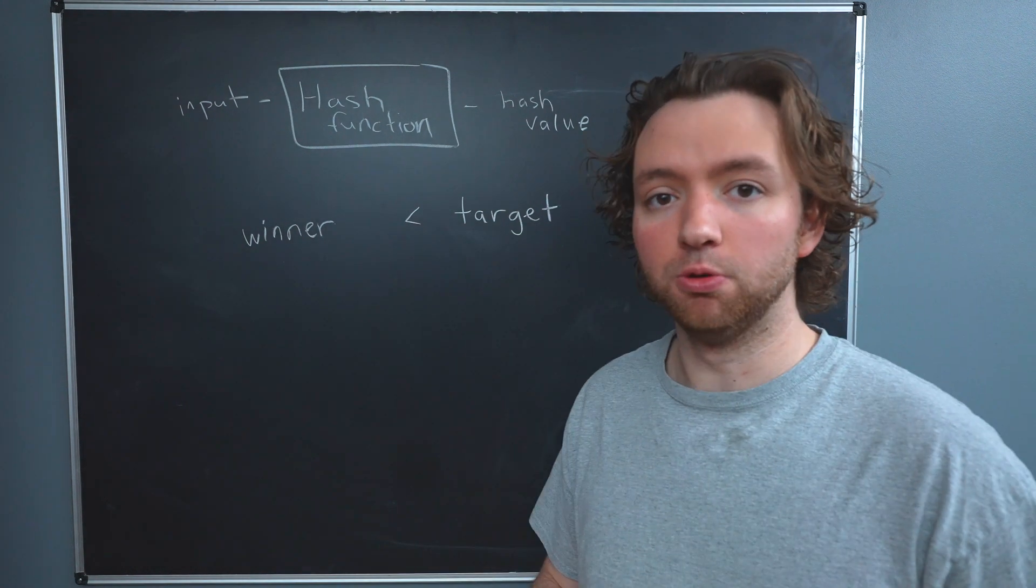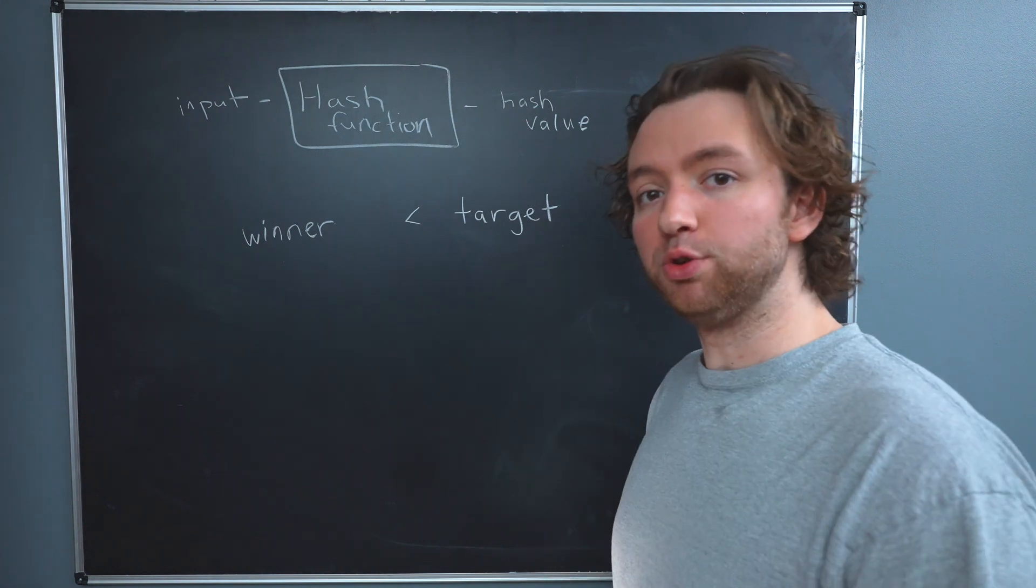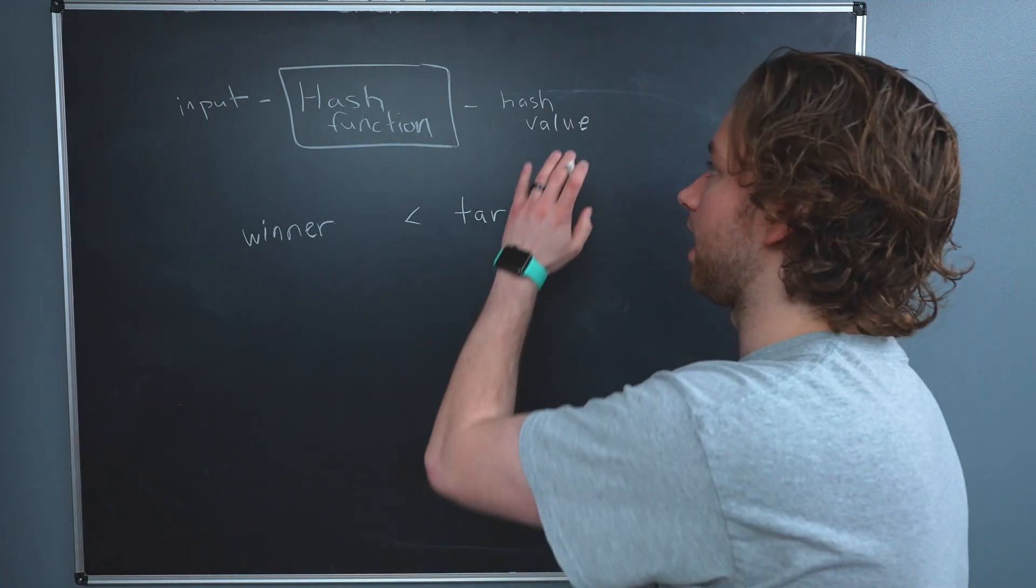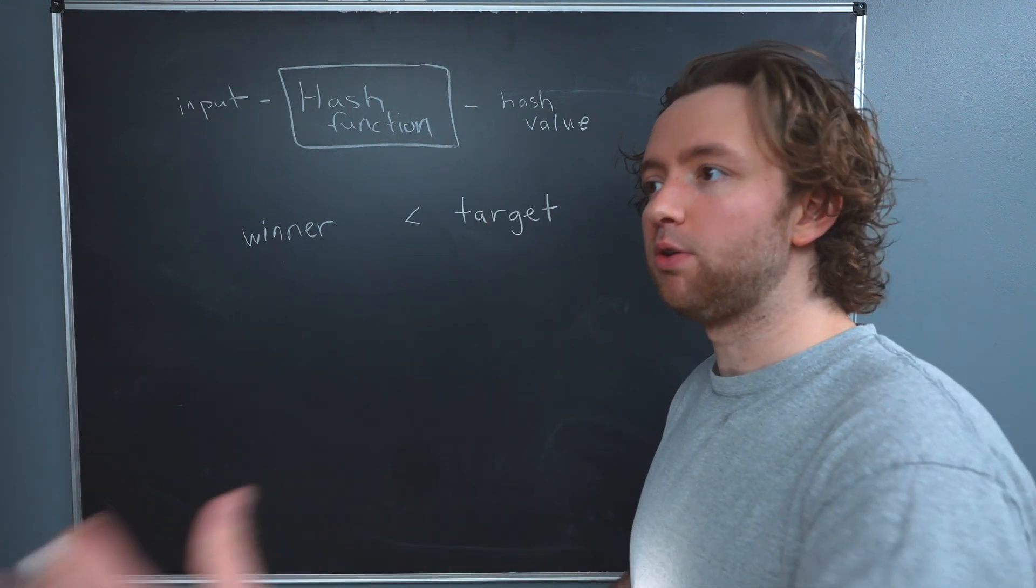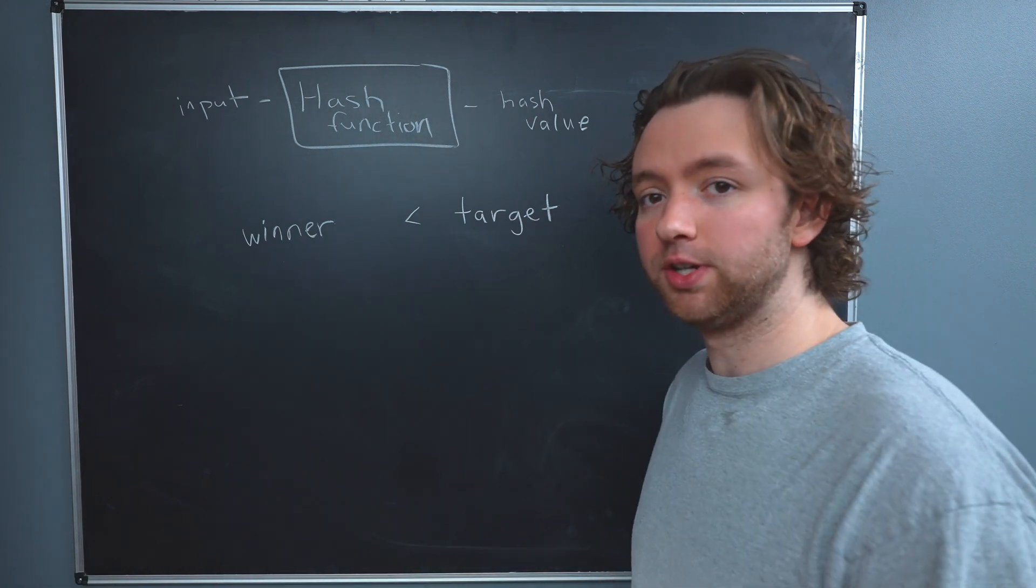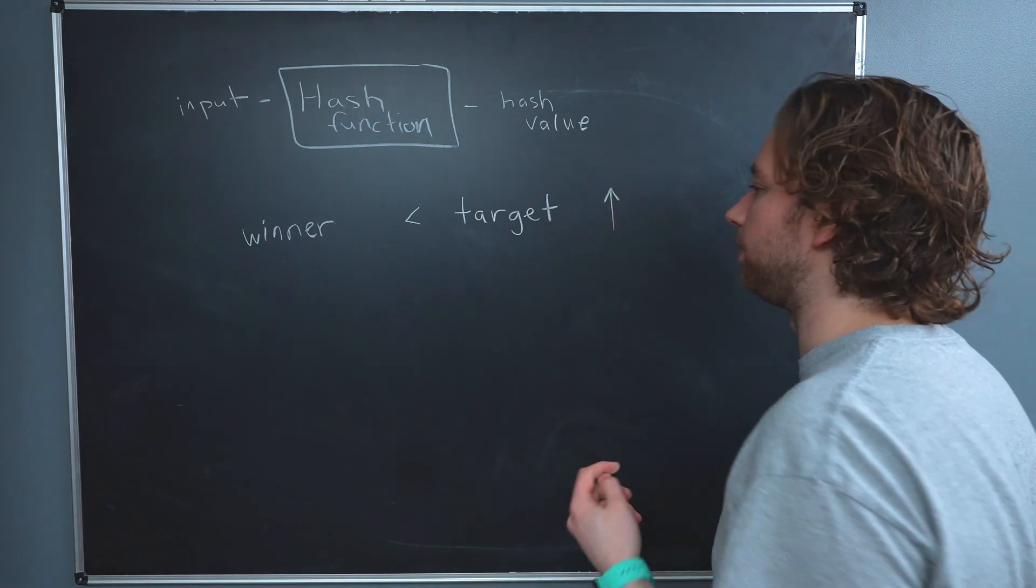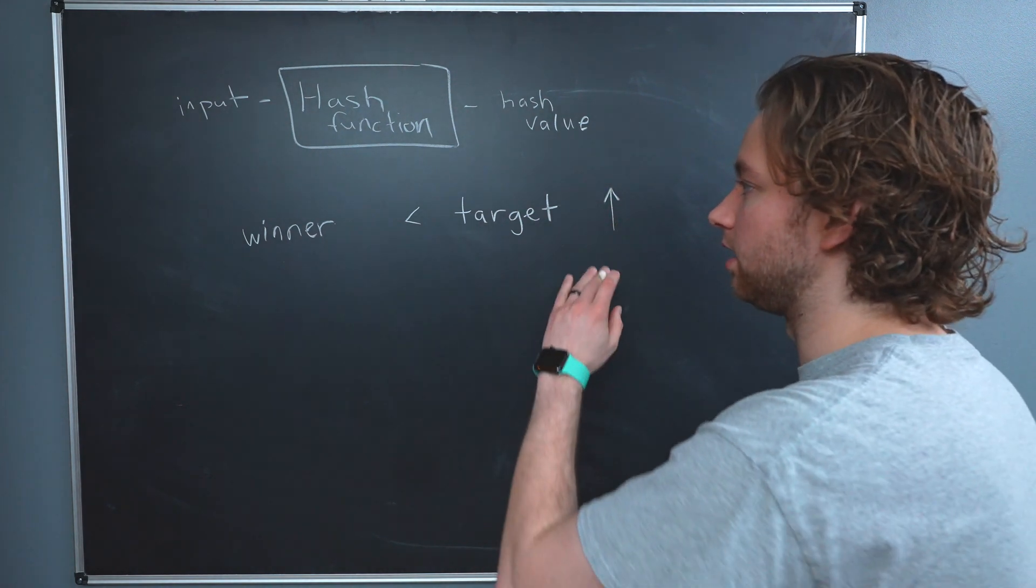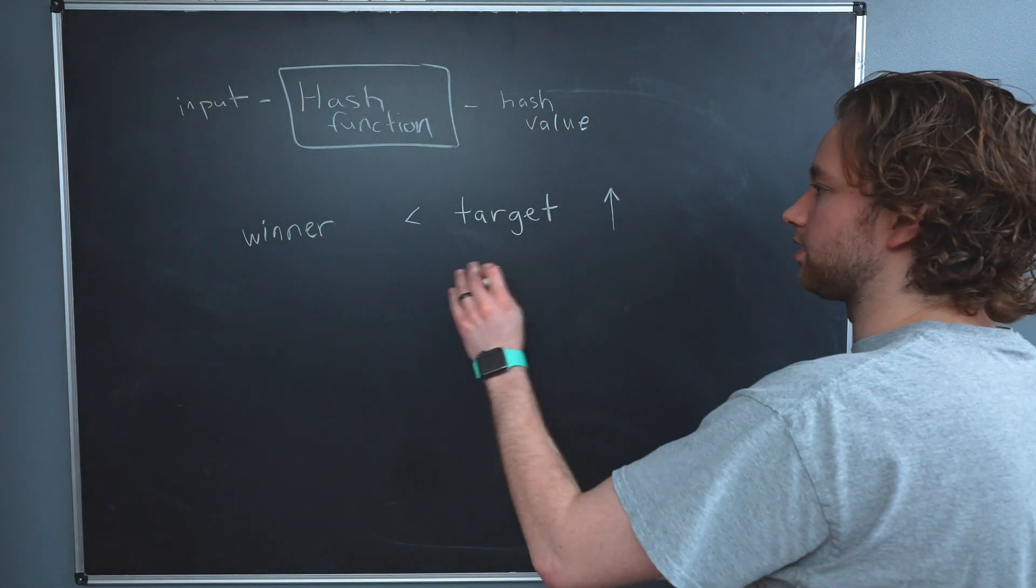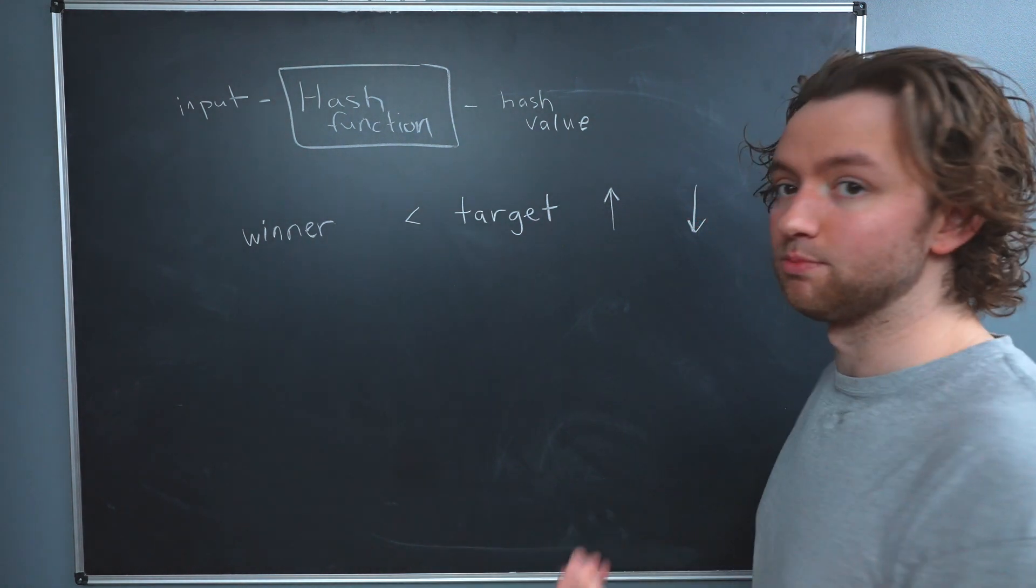Now this target exists as a tool to adjust how difficult it is to win in proof of work. In proof of work, the miners have to prove that they've done the work by calculating a hash value below that target. But the amount of total work required goes up and down. So as the target goes up, it becomes easier because getting under a larger number is easier. As the target goes down, the acceptable values are decreased, so it becomes more difficult.